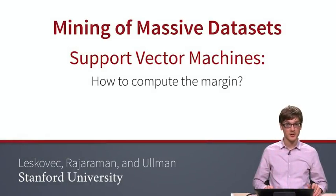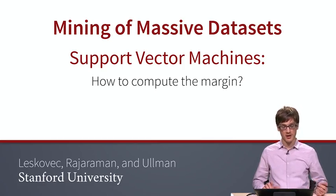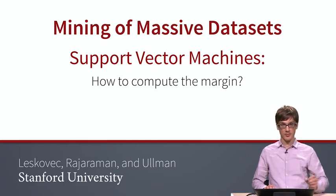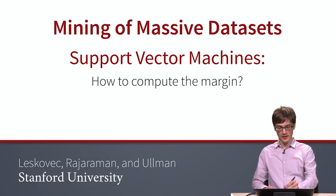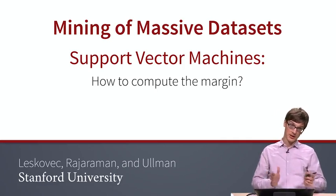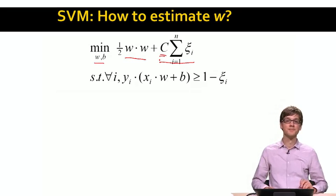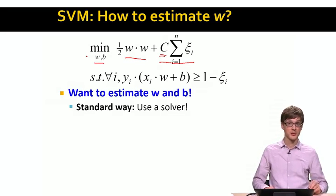Having defined the support vector machine's optimization problem, now we want to solve it. We want to find the vector w and the bias parameter b. As we said before, we want to find w and b such that the length of w is small, and also the sum of the slack penalties is small. The slack penalty parameter c is trading off between the length of the margin and the misclassifications we are making. So our goal is to find b and w and basically solve the optimization problem.